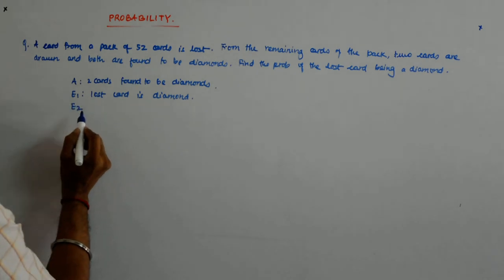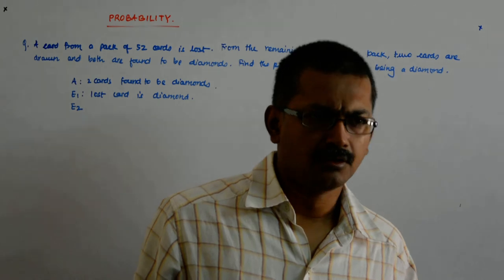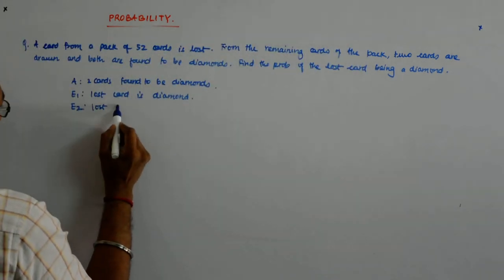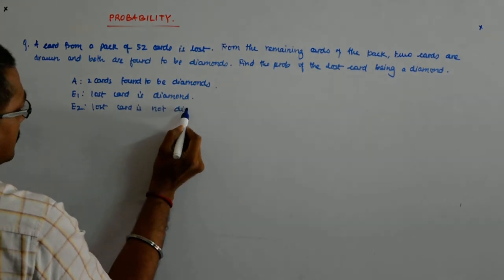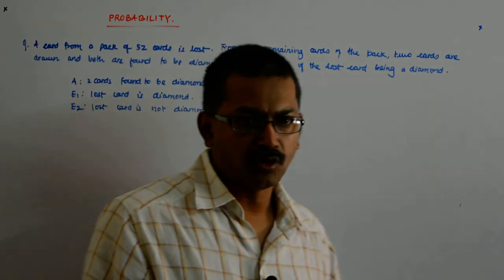Then what is the other partition? Lost card is not diamond. No other possibilities, right? No other possibilities.